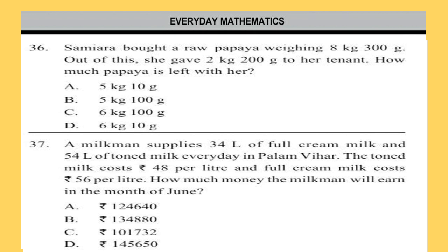The next section is Everyday Mathematics. Question 36: Samira bought a raw papaya weighing 8 kg 300 grams. Out of this she gave 2 kg 200 grams to her tenant. How much papaya is left with her?